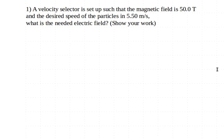So we start off by figuring out what it is we've got as our knowns. And our first known is the magnetic field, 50.0 Tesla. And the second one is our velocity, 5.50 meters per second.